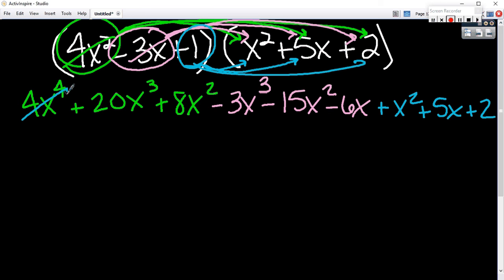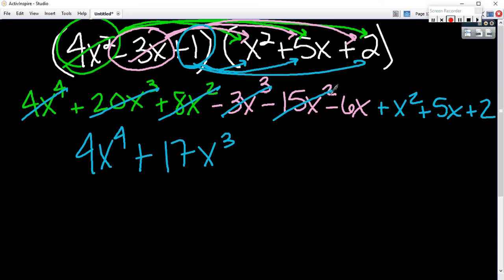4x to the fourth. How about powers of 3? I got 20 and negative 3, which would give me 17x cubed. Powers of 2: 8 and negative 15 would be negative 7, and 1 would be negative 6x squared. Just x's: I've got negative 6 and positive 5, which would be negative 1x. And my little 2 on the end.